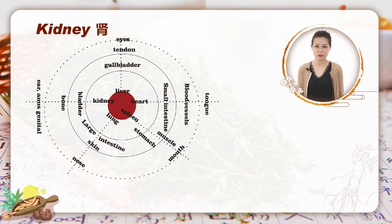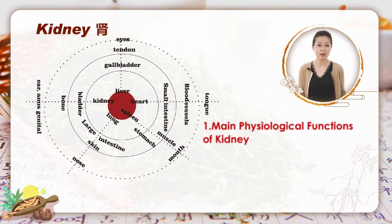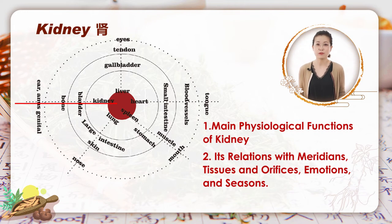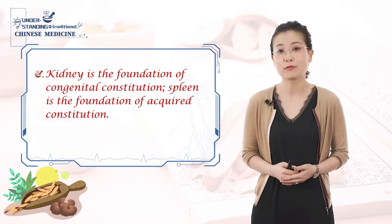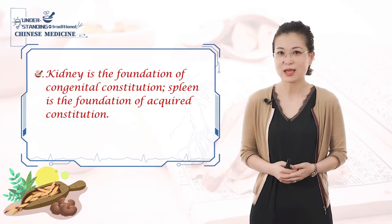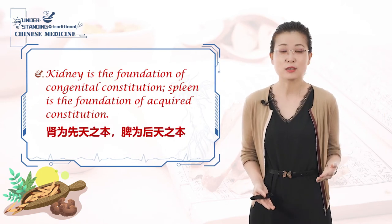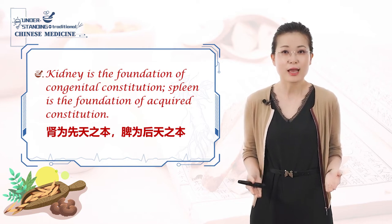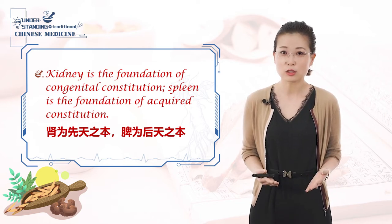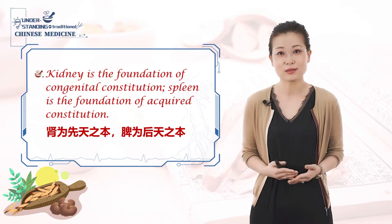The contents include the main physiological functions of kidney and its relations with meridians, tissues, orifices, emotions and seasons. Concerning the status of kidney among zangfu organs, it is said that kidney is the foundation of congenital constitution, and spleen is the foundation of acquired constitution.